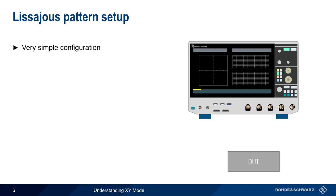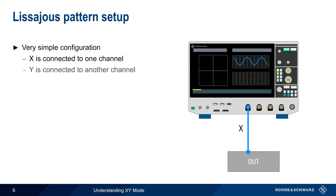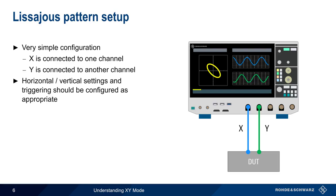Part of the reason why Lissajous patterns are a popular XY mode application is that they are very easy to configure. The X signal is connected to one channel and the Y signal is connected to another channel — often channel 1 and channel 2, though this is configurable on some oscilloscopes. The result will be a plot of X versus Y. Note that like all other scope measurements, the horizontal and vertical settings should be configured appropriately, and a suitable trigger type and trigger parameters should also be set.